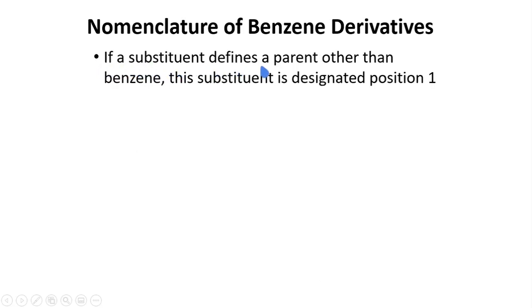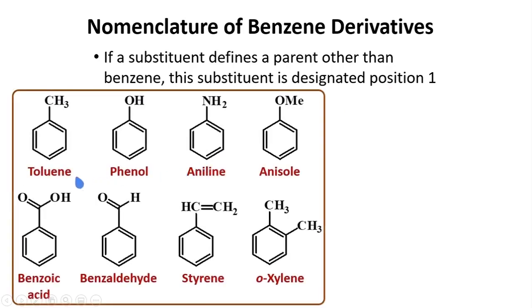If a substituent defines a parent other than benzene, that substituent is designated position one. There are many benzene derivatives that are already given common names. If the substituent is a methyl group, we call it toluene. If the substituent is a hydroxyl group, we call it phenol. Other common names include aniline, anisole, benzoic acid, benzaldehyde, styrene, and xylene. We can use these names as parents.